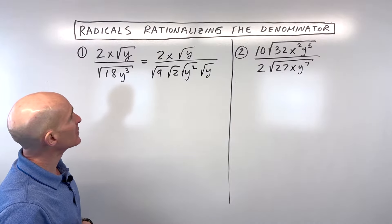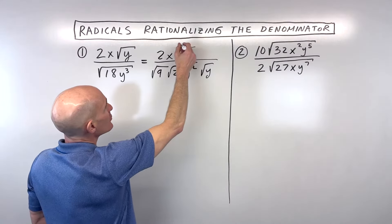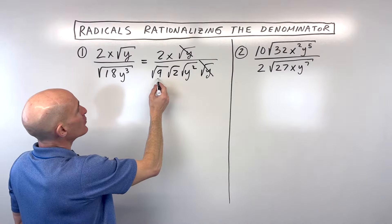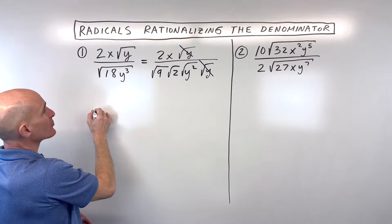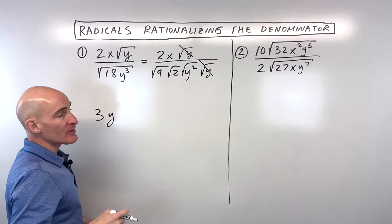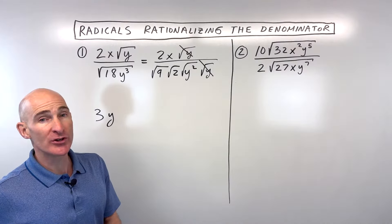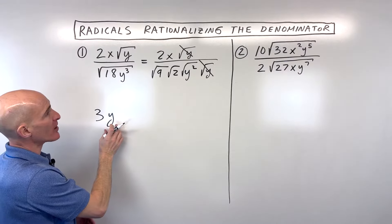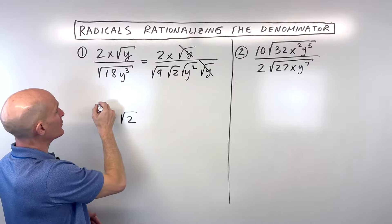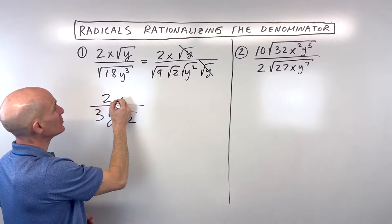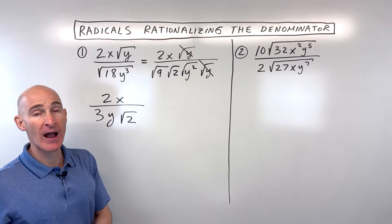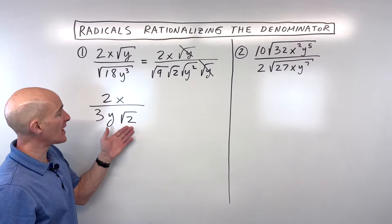Now let's take a closer look. We can notice that the square root of y's are going to cancel — that works out really nicely. The square root of 9 is 3, and the square root of y squared is y. In this video, we're going to assume that all variables are positive, so we're not going to use absolute values. And we're left with the square root of 2. In the numerator, we have 2 times x. We don't want this square root of 2 in the denominator — that's considered improper, it's irrational, and we want to rationalize it.